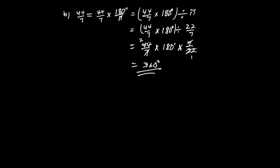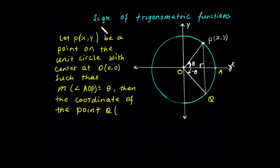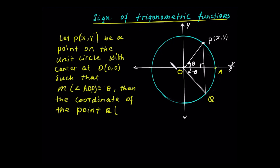And the algebraic sign of the trigonometric functions. Sign of trigonometric functions — algebraic sign on the quadrant line. Opposite angle relations: positive angle theta, and negative angle theta.